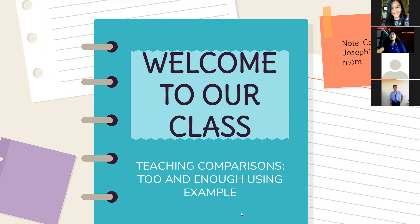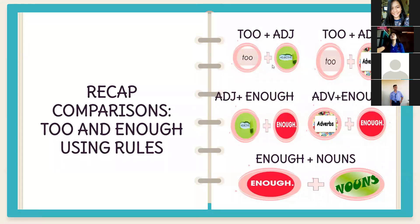So for today we're going to talk about comparisons 'too' and 'enough' again, but using examples. Let's have a recap first. What are the rules for using 'too' and 'enough'? Anthony: the rules are 'too' plus adjective, 'too' plus adverb, adjective plus enough, adverb plus enough, and enough plus noun.